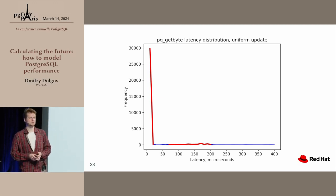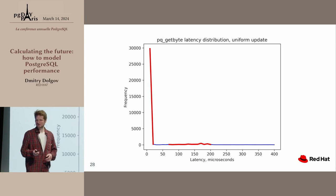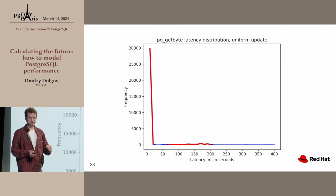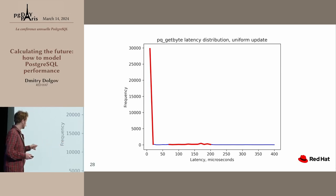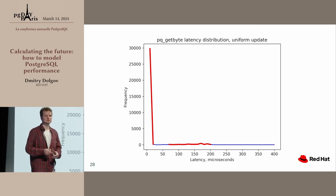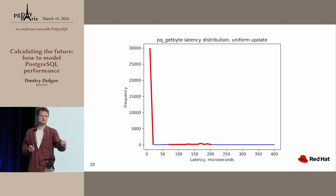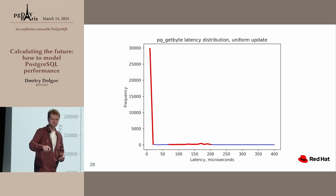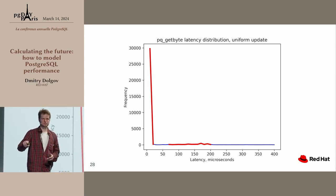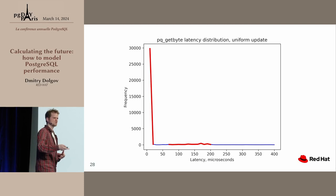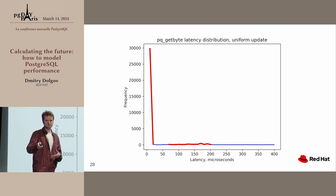There's a very interesting consequence of this learning. The graph shows the latency distribution for PQGetByte: on the x-axis latency in microseconds, on the y-axis frequency. There are two modes: the red one where it finishes extremely fast, and then a second bump — a small but moderate one — that contributes about 10% of overall results. This second mode averages around 170 microseconds, much slower. In simple words: most of the time the function is extremely fast, but about 10% of the time it's much slower.